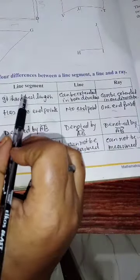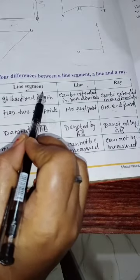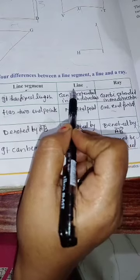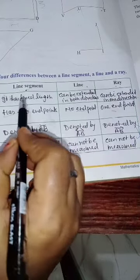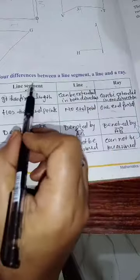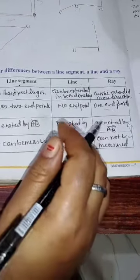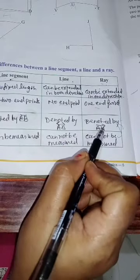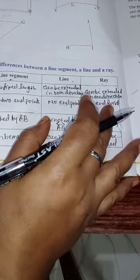Now you have to write the difference between line segment, line, and ray. A line segment has a fixed length. A line can be extended in both directions. A ray has one fixed point and can be extended in one direction. A line segment is denoted by AB with a bar; a line has arrows on both sides; a ray has one endpoint with a one-side arrow. A line segment can be measured; a line and a ray cannot.